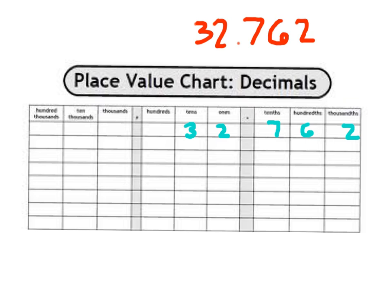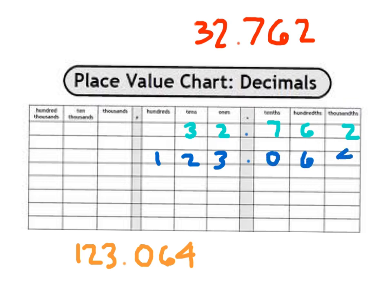If I wanted to go ahead and put another number into that decimal place value chart, I'll show you a couple more. Here's one of them: 123.064. I'll write it in, and then we'll read that number. So we have 1, 2, 3, decimal point, 0, 6, 4.